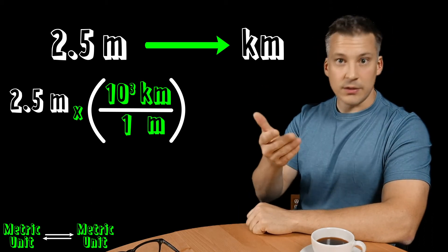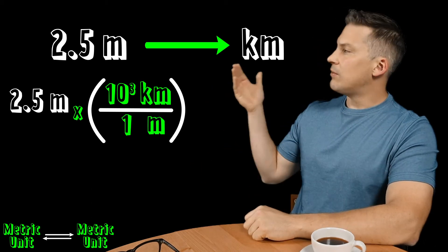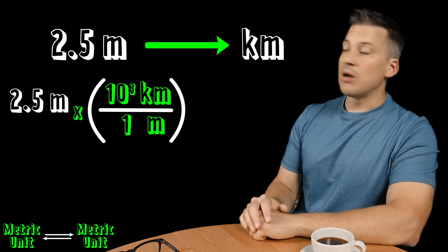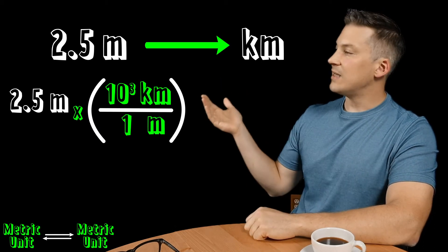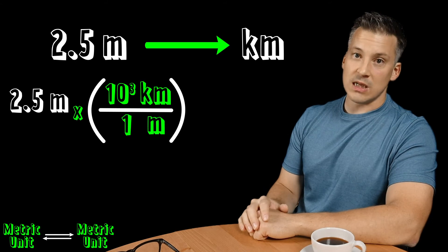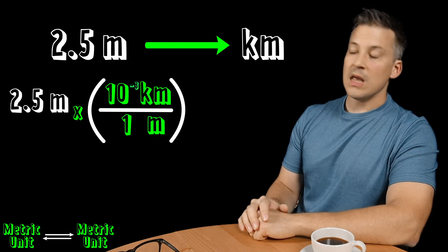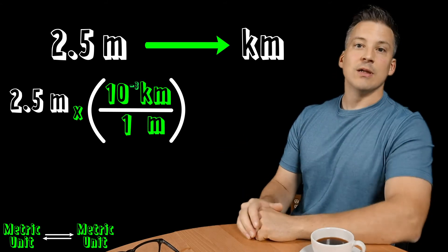If there is no exponent like we have here for meters, where it's just a one, just leave it alone. You don't have to do anything. So now what I'm going to do is flip the sign here of the kilometer. So instead of it being 10 to the positive three, it now becomes 10 to the negative three. And now I'm ready to calculate.